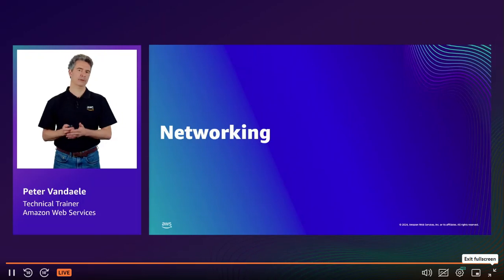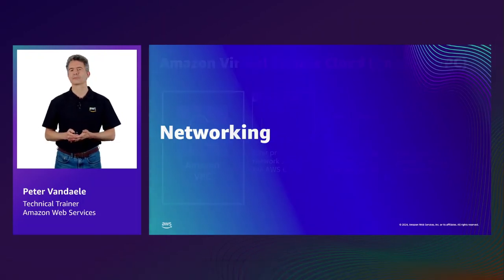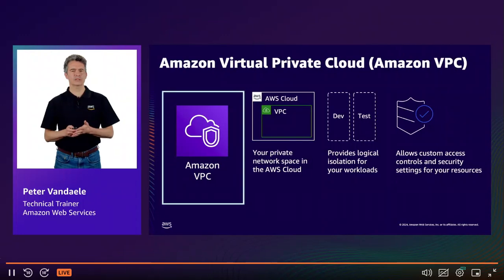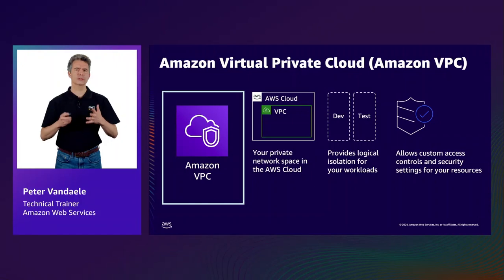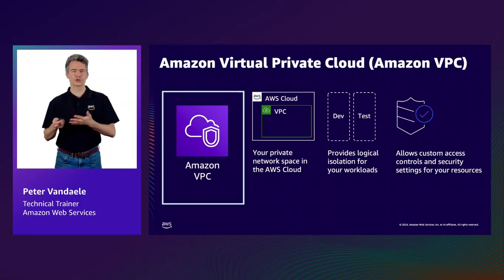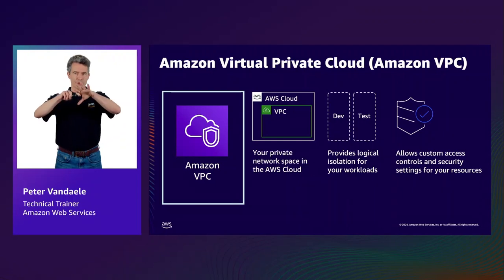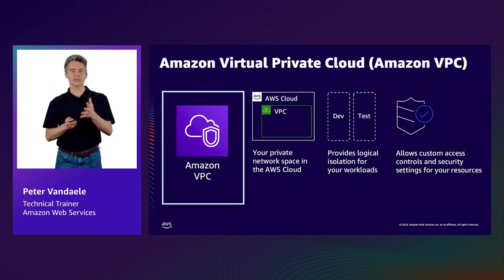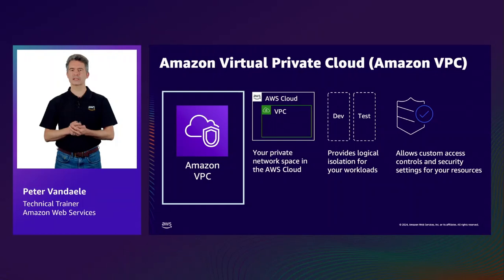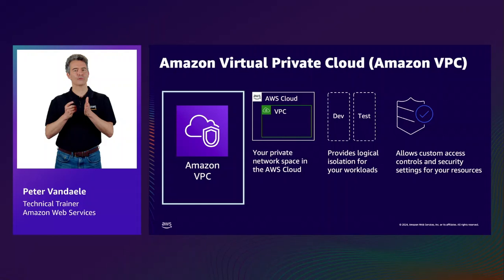The AWS cloud is being used by millions of users, and resources are constantly being created. When you think of deploying resources on AWS, you want to create your resources inside a virtual boundary that isolates your resources from other customers' resources. The service that can provide you with that is referred to as the Amazon Virtual Private Cloud, or VPC.